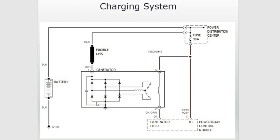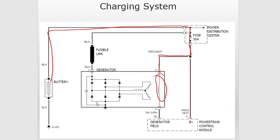Let's look at another one quickly — this is a charging system, and this is the rotor inside of the alternator. This rotor, in order to energize, needs to have a power and a ground. Here's the powertrain control module that controls this. This rotor connects directly to the battery, so it already has a power. In other words, it's going to be duty cycled — or pulse width modulated — by a low side driver inside of the powertrain control module.